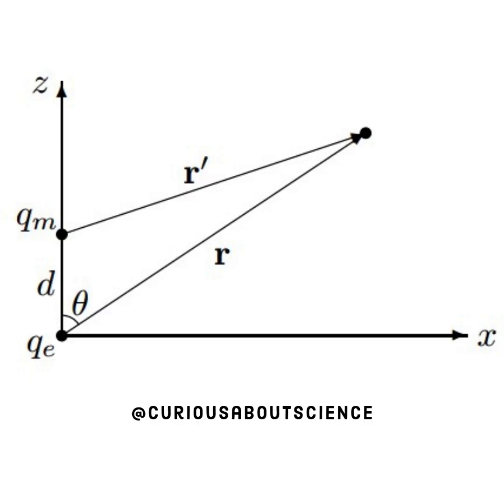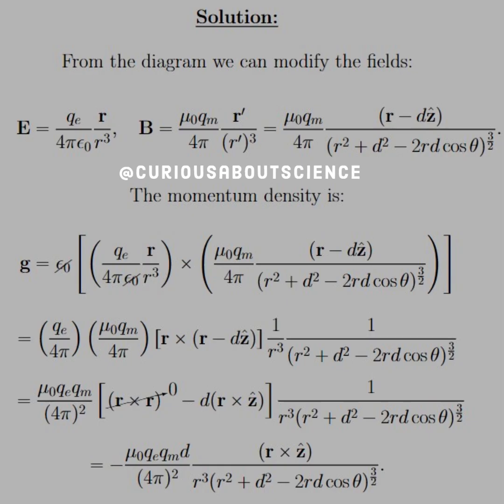All right, let's go ahead and draw it out. So we have QE centered at the origin of the XZ plane, and then we have QM some distance D above QE on the Z-axis. Again, it makes life easy setting it up this way. So we have source coordinate R to some point and QM coordinate R prime, some angle theta. So what we need to do is modify these equations for the script R, which is a separation vector for each of these fields, respectively.